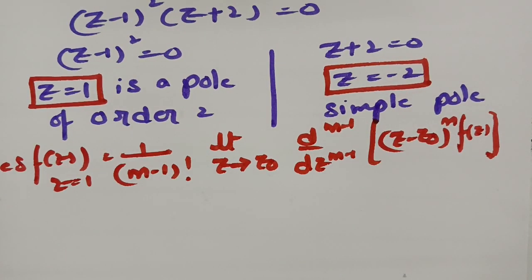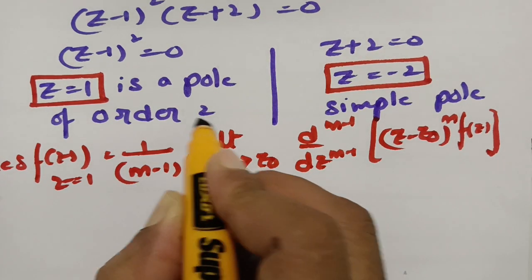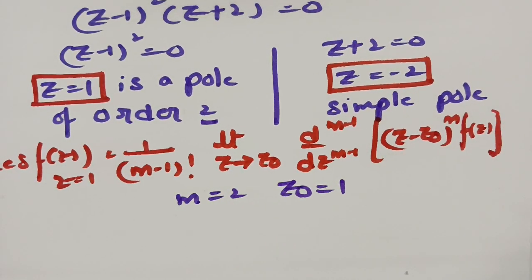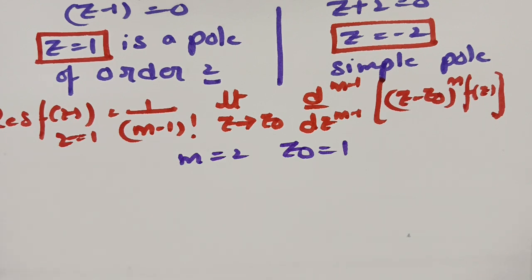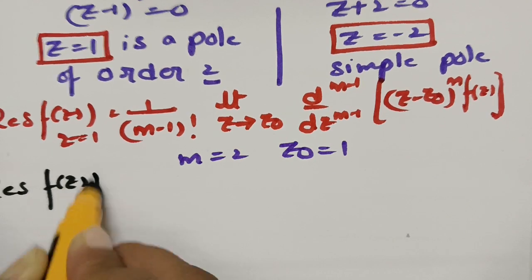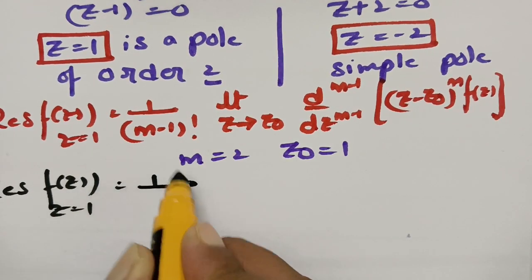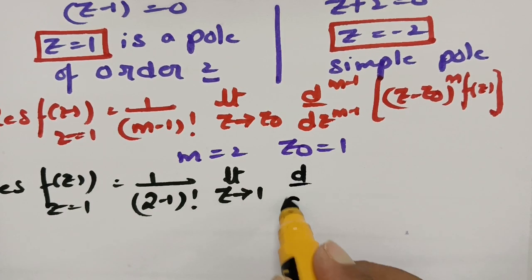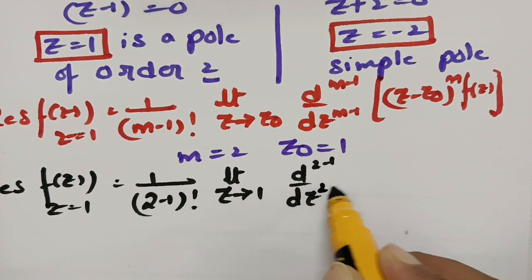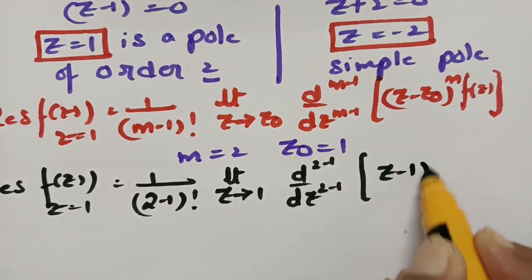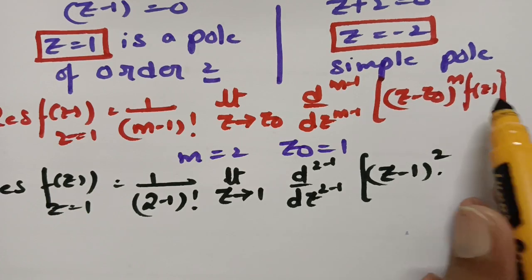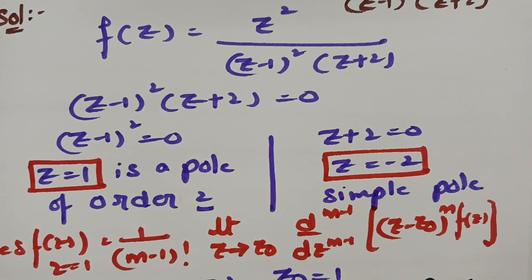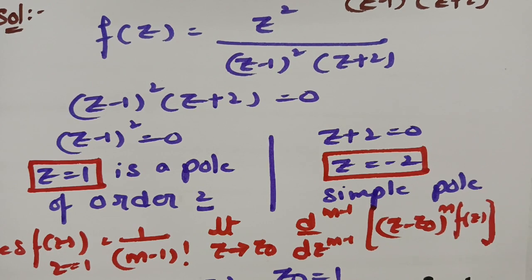Here, m = 2 and z₀ = 1. So the residue of f(z) at z = 1 is: (1/(2−1)!) × lim[z→1] d/dz [(z−1)² × f(z)]. Substituting f(z) = z² / [(z−1)²(z+2)], we can cancel (z−1)² from numerator and denominator, giving lim[z→1] d/dz [z² / (z+2)].